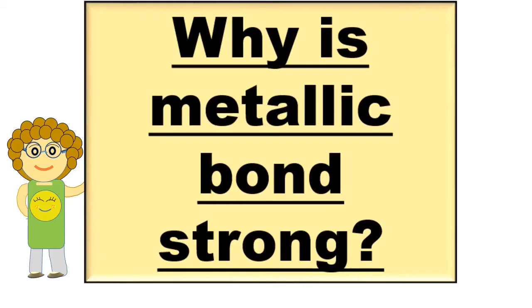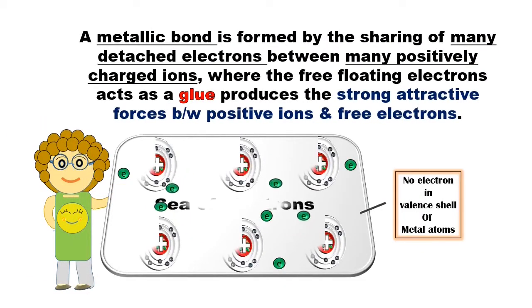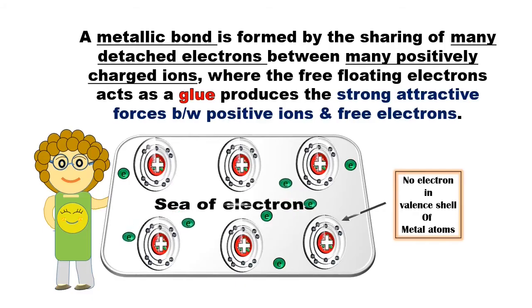Why is metallic bond strong? A metallic bond is formed by the sharing of many detached electrons between many positively charged ions, where the free-floating electrons act as a glue, producing the strong attractive forces between positive ions and free electrons.